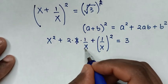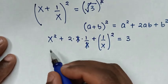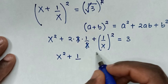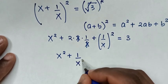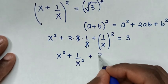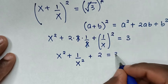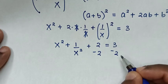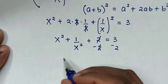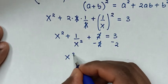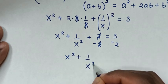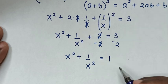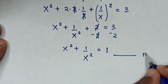Then in the next step, the x cancels with this x, so it will be x squared plus 1 over x squared, plus 2 times 1 which is 2, equals 3. Then we subtract 2 from both sides, so 2 minus 2 is 0, giving us x squared plus 1 over x squared equals 3 minus 2, which is 1. We'll call this equation 1.